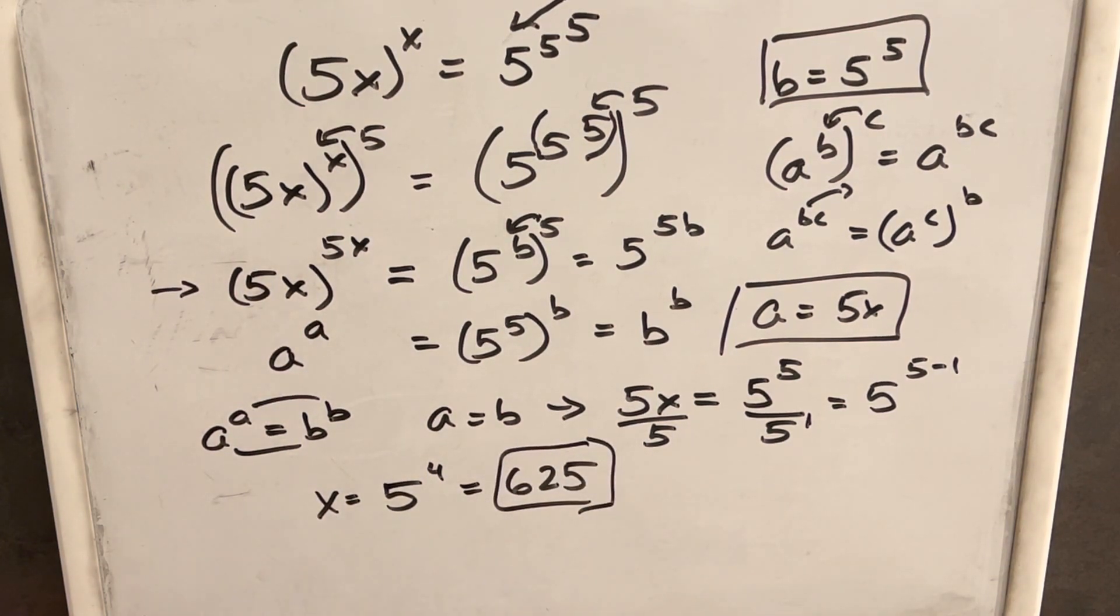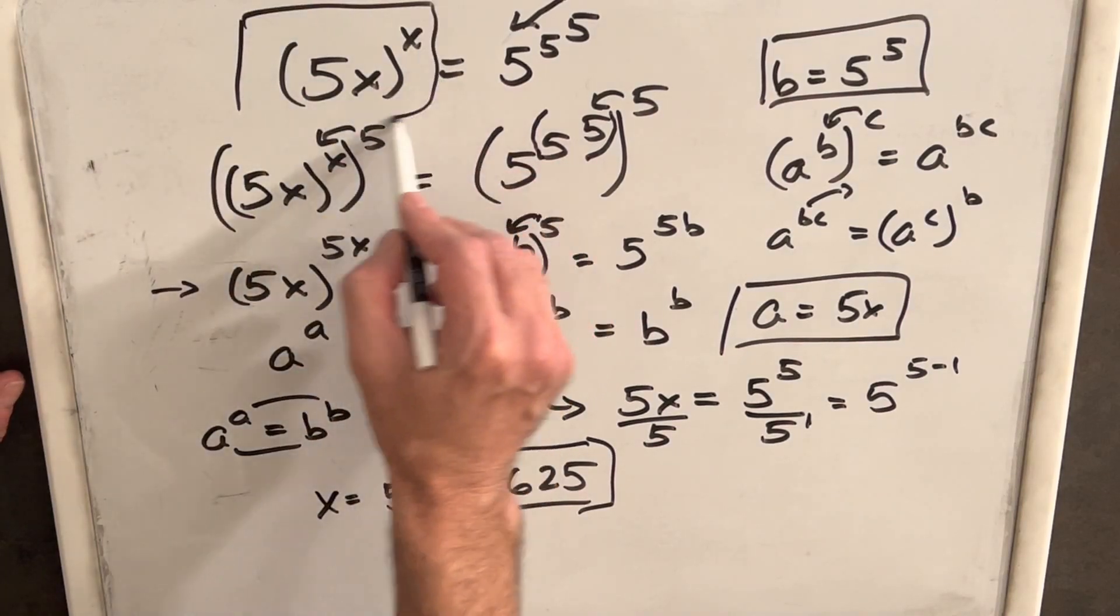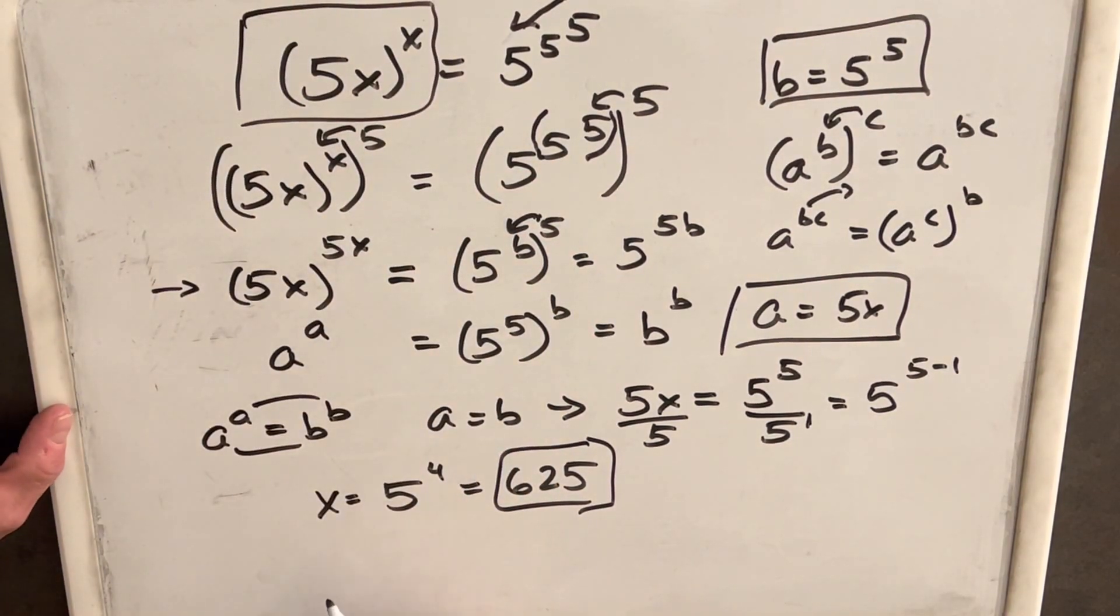Now let's just check that with our original problem. Let's see what happens if we put a 625 in there. 625. And let's use the 5 to the 4th. It's going to be easier to work with.